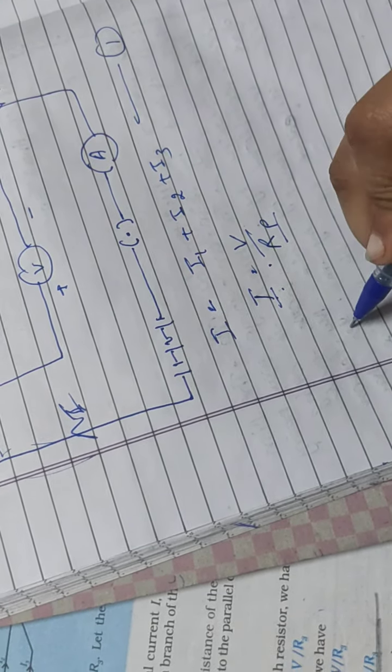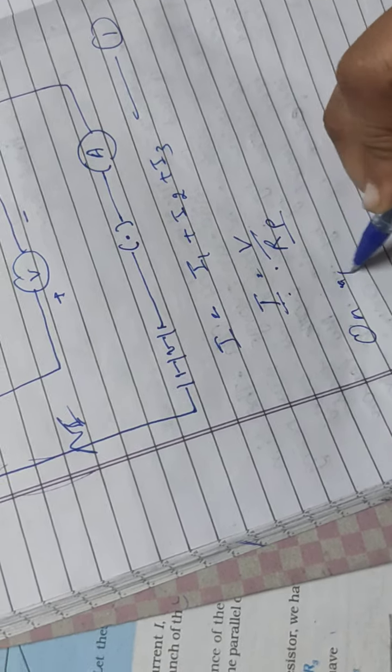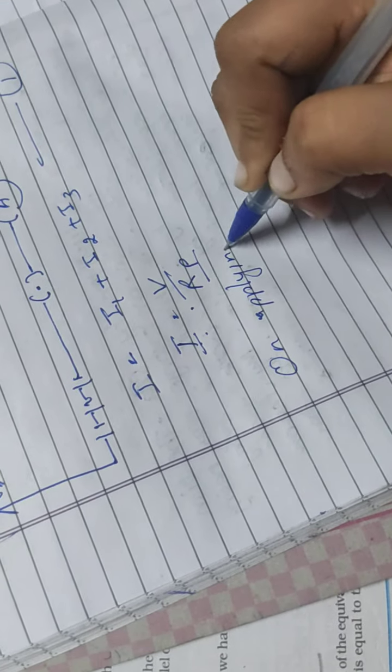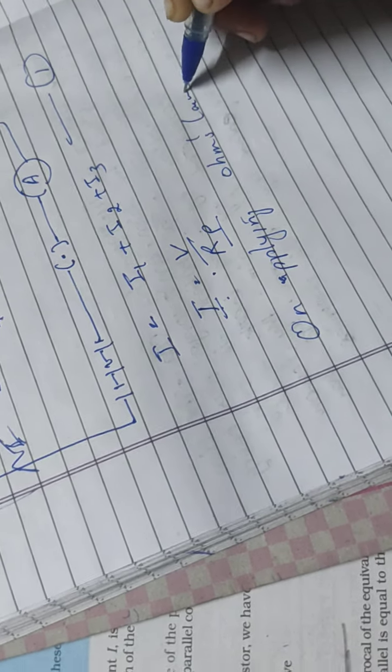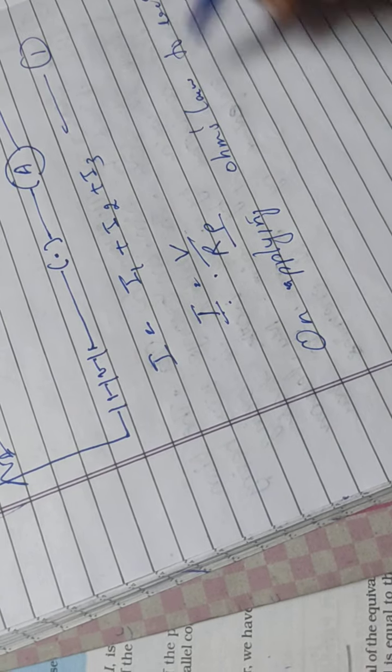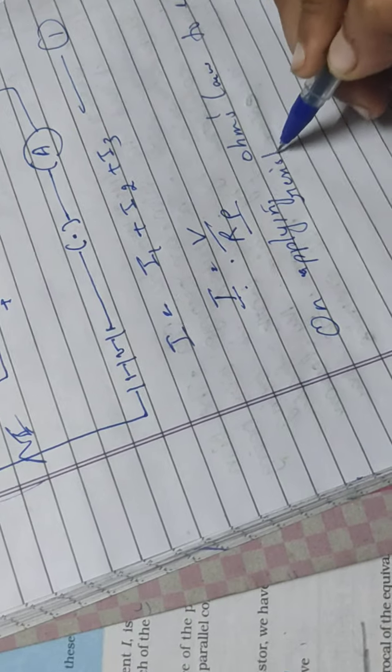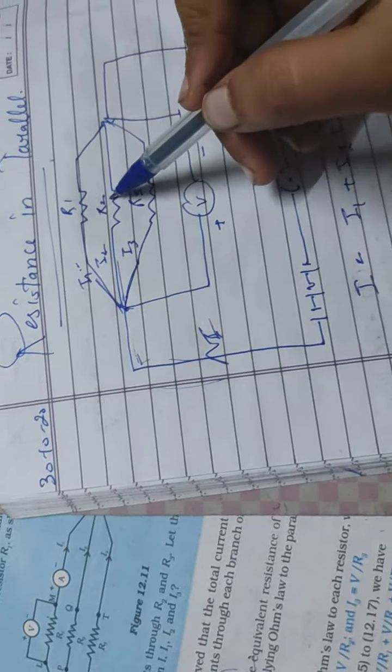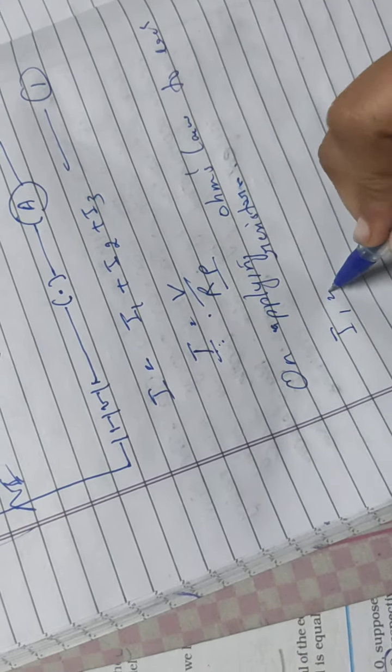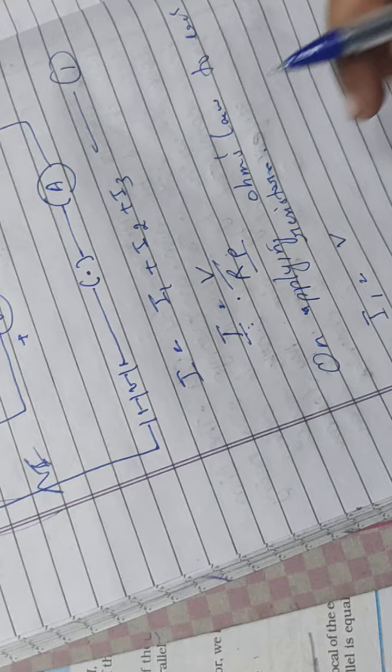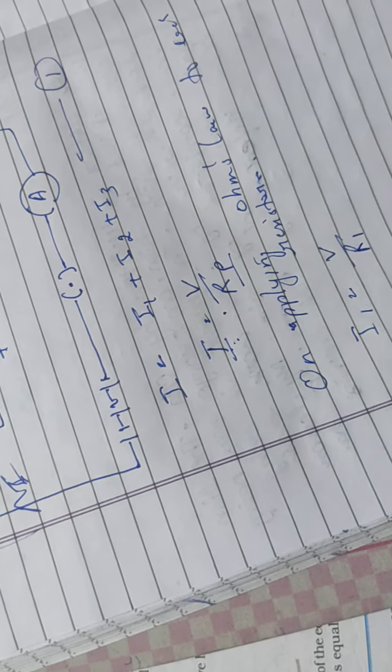On applying Ohm's law to each resistance R1, R2, R3. Apply to R1, so in place of I, what will come? I1. V will remain same, V will not change. This gives R1. So I1 = V/R1.